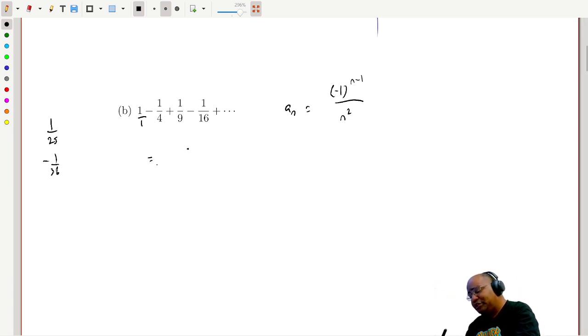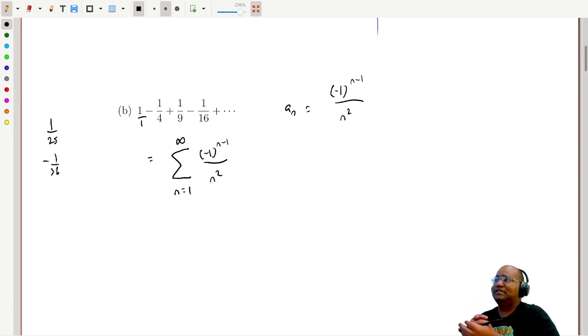And this, written in summation notation compactly, is just like this. We're going to sum from n equals 1 to infinity of minus 1 to the n minus 1 over n squared. And that is all you need to do to write this as an infinite series using the compact summation notation, this capital sigma, the sigma notation.